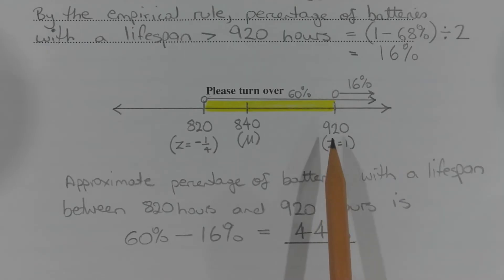And the percentage of batteries with a lifespan greater than 920 hours is 16%, which is indicated by this arrow here. So to get the percentage of batteries with a lifespan greater than 820 hours but less than 920 hours we take 60% and we subtract from that 16% to get the percentage we require. So the approximate percentage of batteries with a lifespan between 820 hours and 920 hours is 60% minus 16% which equals 44%.